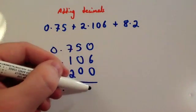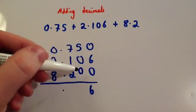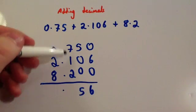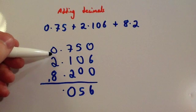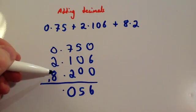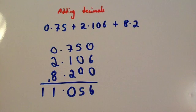So, 0 plus 6 plus 0 is 6. 5 plus 0 plus 0 is 5. 7 plus 1 is 8, plus 2 is 10, so put the 0 down, carry the 1. And 0 plus 2 plus 8 is 10, plus 1 is 11, so put the 11 down. So, the answer would be 11.056.